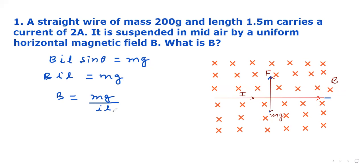We put the values. M is given as 200 grams, so 200 times 10 to the power minus 3 times g. G is 9.8, acceleration due to gravity, divided by current. Current is 2 amperes and the length of wire is 1.5 meters. So, if we evaluate, we will get 0.65 tesla.